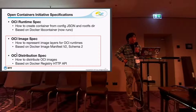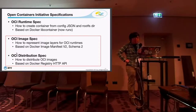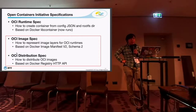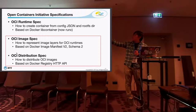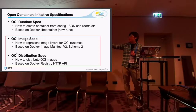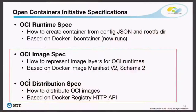OCI runtime spec defines how to create a container from a JSON configuration file and a root filesystem directory. OCI image spec defines how to represent image layers for OCI runtimes. The OCI runtime spec requires just a plain directory, but we need an archive for creating a root filesystem directory, so OCI image spec defines how to represent the root filesystem using tar-based layers. And we need to distribute these image layers, so we have the OCI distribution spec, which lets us distribute image layers using a REST API.